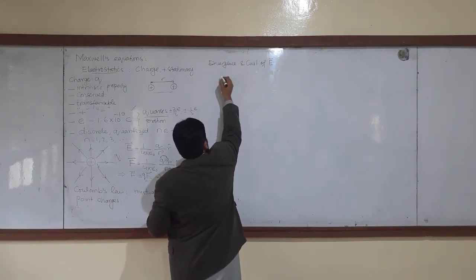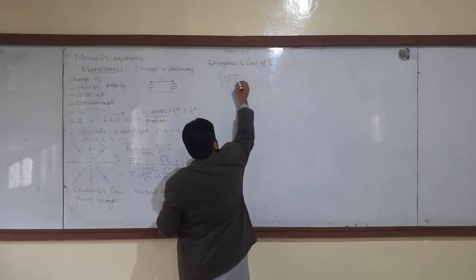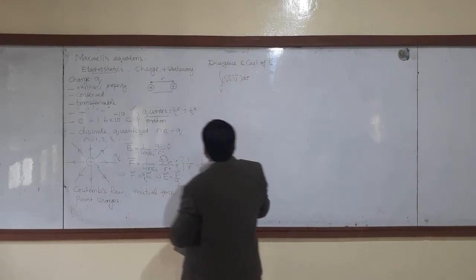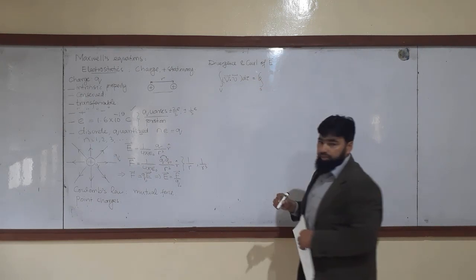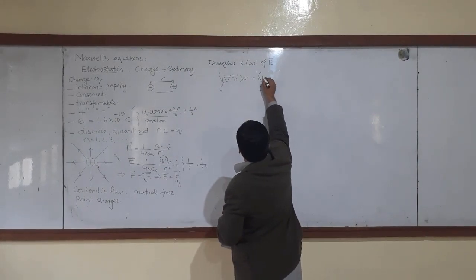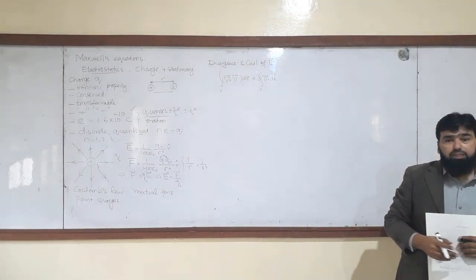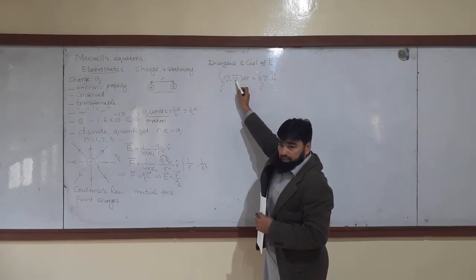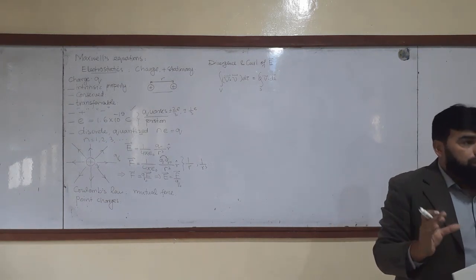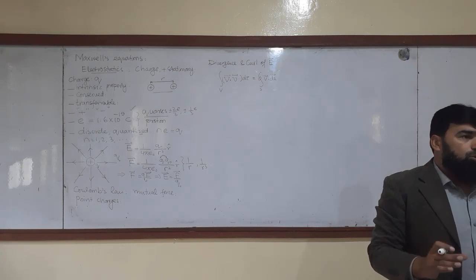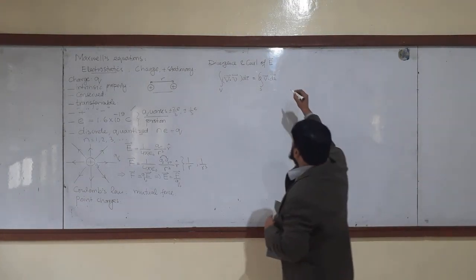Divergence and curl — you know there are three fundamental theorems we studied: the fundamental theorem of gradient, the fundamental theorem of divergence, and the fundamental theorem of curl. We are now discussing the divergence and curl of E. The divergence theorem states that the volume integral of the divergence of a vector quantity V over a volume equals the closed surface integral of that quantity dotted with the area element. The divergence of something equals the flux of that quantity going out — this is called the divergence theorem.